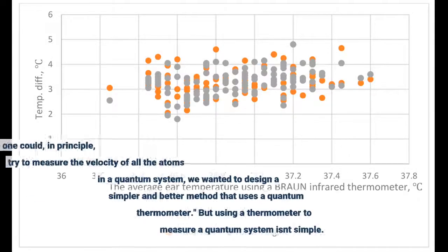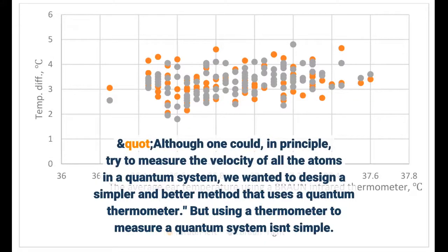Although one could, in principle, try to measure the velocity of all the atoms in a quantum system, we wanted to design a simpler and better method that uses a quantum thermometer.